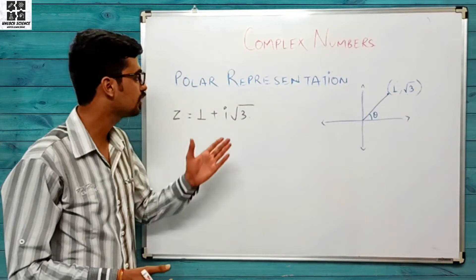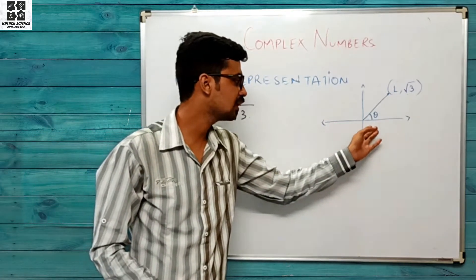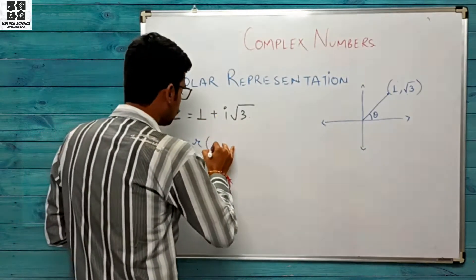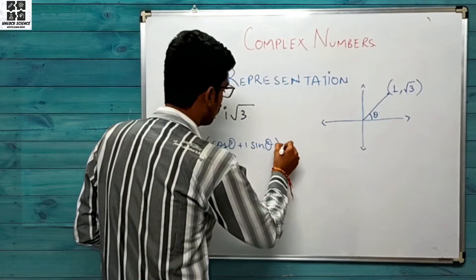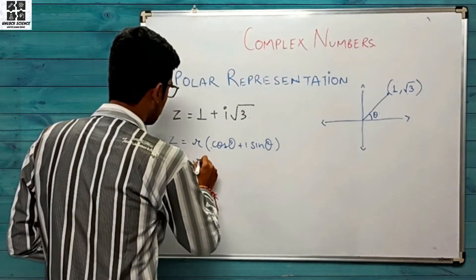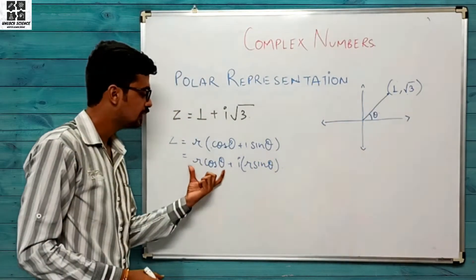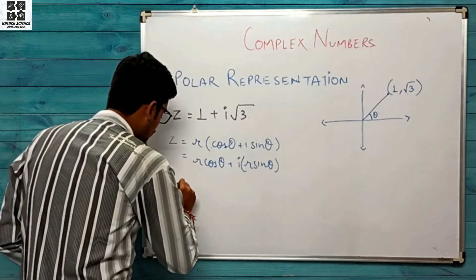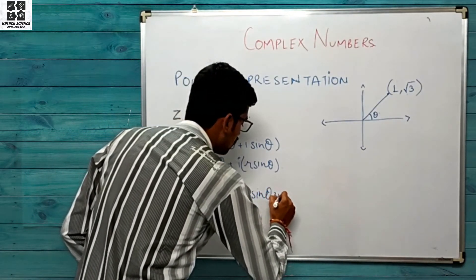Now let us take a question. The question says z = 1 + i√3. Isko polar form mein represent karna hai. Polar form z = r(cos θ + i sin θ) hota hai, jo expand hoke r cos θ + i·r sin θ ban jaata hai. Yeh a + ib form mein hai, toh: r cos θ = 1 (first equation) aur r sin θ = √3 (second equation).